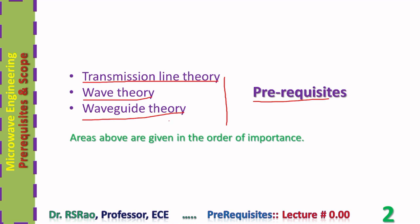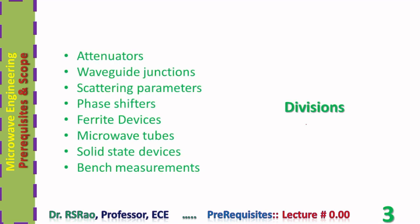One can notice that wave guide theory is essentially a combination of transmission line theory and wave theory. If one has studied and understood these two theories thoroughly, wave guide theory becomes quite accessible. We also wonder about the scope and coverage of the subject microwave engineering.